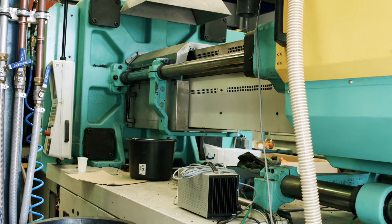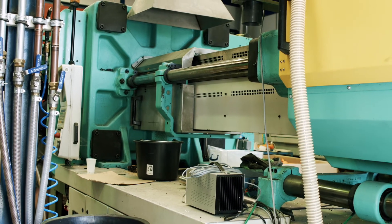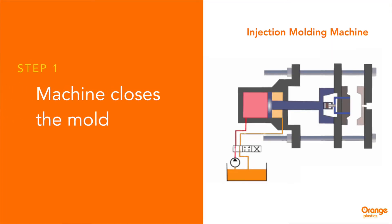In order to create a plastic product, we need to execute a sequence of events called the injection molding cycle. The cycle begins when the machine closes the mold.